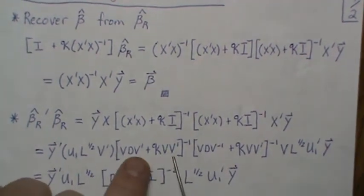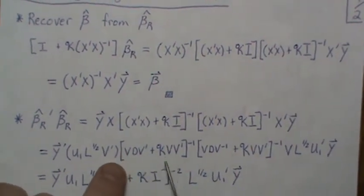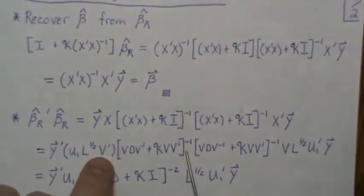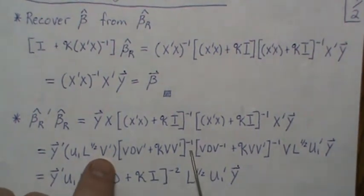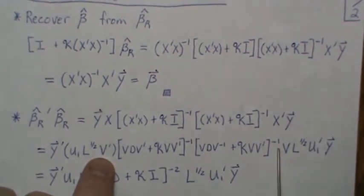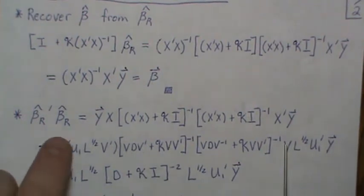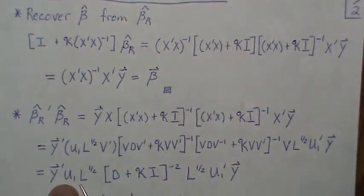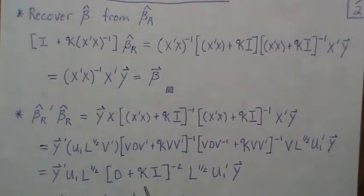When we left factor out V and right factor out V transpose and then distribute the inverse, the V's cancel with this one and then we get V's here that cancel. I say cancel—they're the identity matrix, so they don't factor in. What's left over is the Y, U1, L to the one-half, and the same way over here, and this is a diagonal matrix.